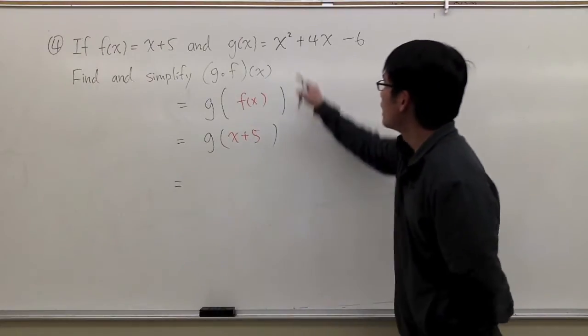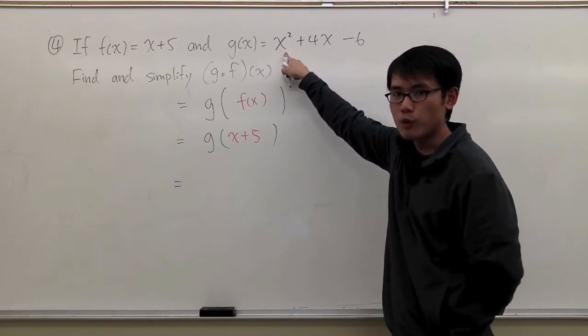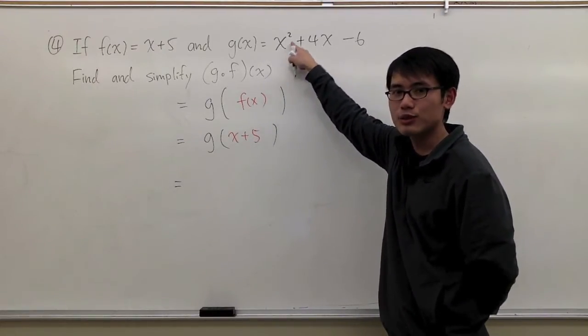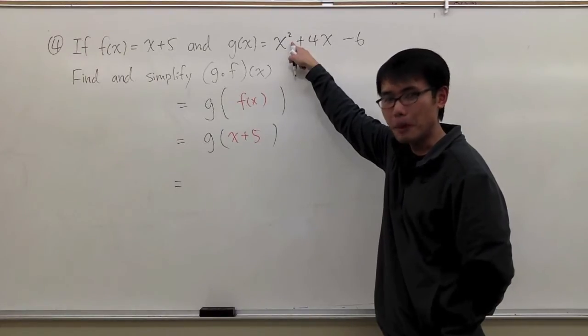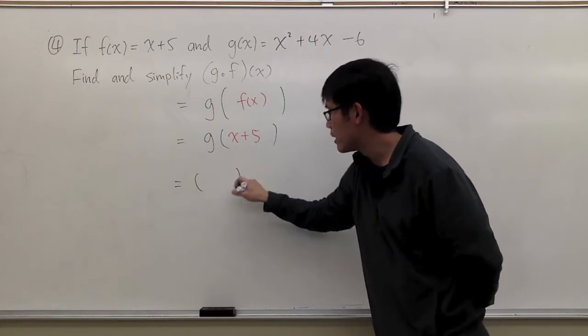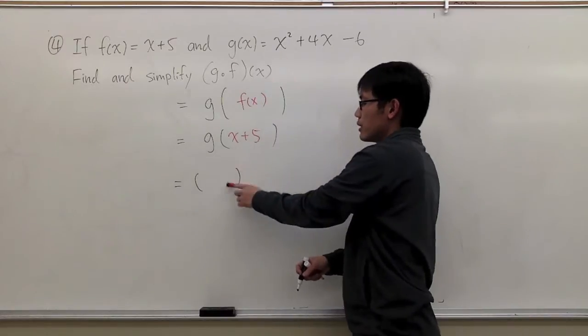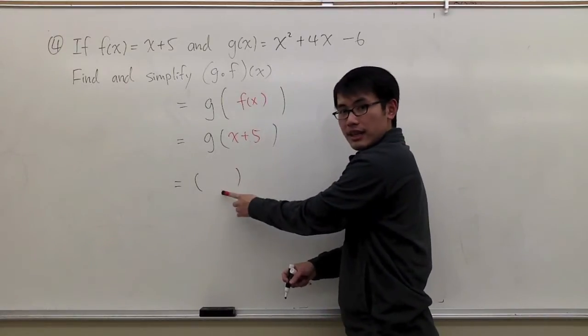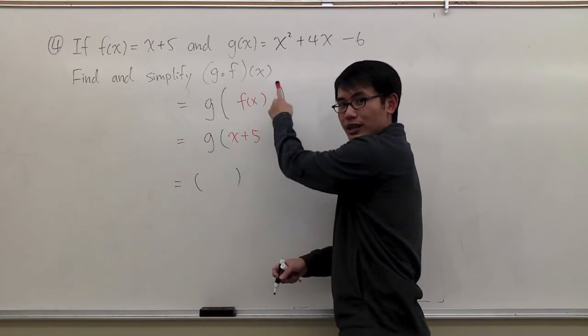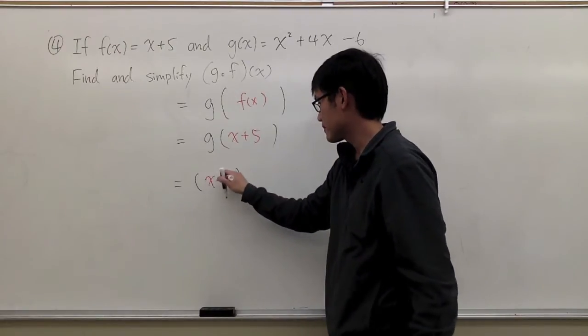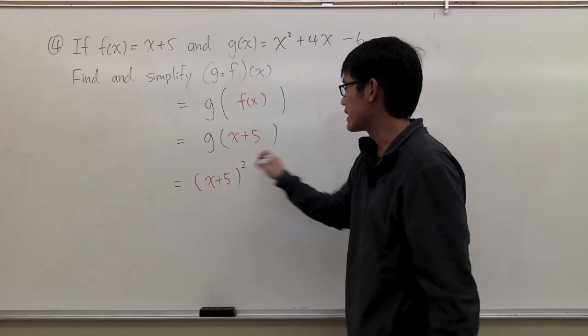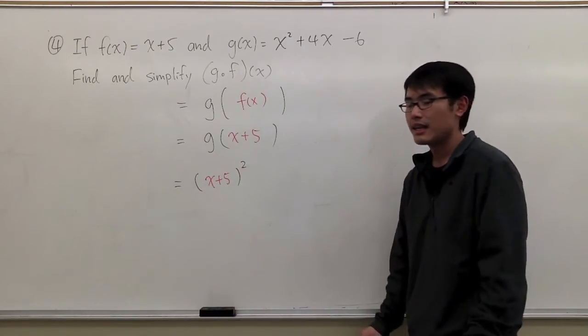So let's see. According to my original formula, I have the x right here, x to the second power. I am going to open the parentheses, and then I am going to draw in the x plus 5 into the parentheses to replace the original x. And that's to the second power. Continue.